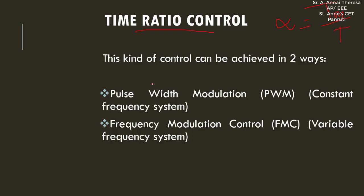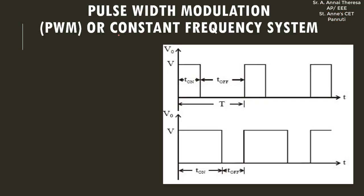Under time ratio control, we have two methods. The first is pulse width modulation technique, otherwise called constant frequency control. The second is frequency modulation control, or variable frequency control. In pulse width modulation, as the name suggests, the frequency is kept constant. Since f = 1/T, keeping frequency constant means the total time period T must be kept constant, but the output voltage must still be varied.